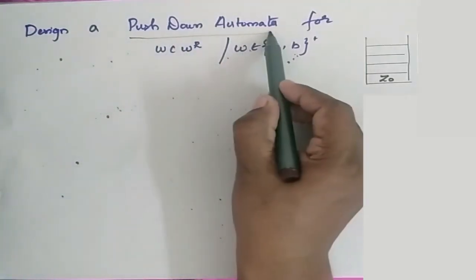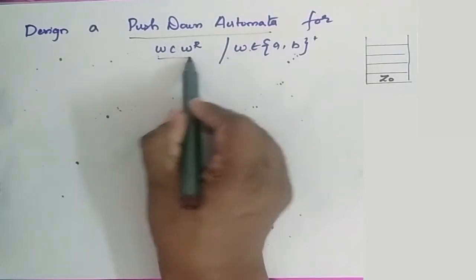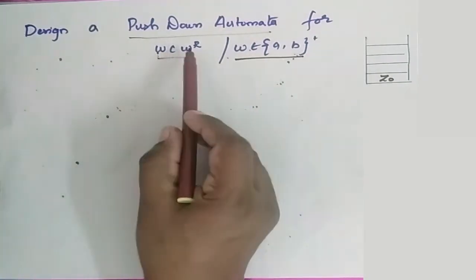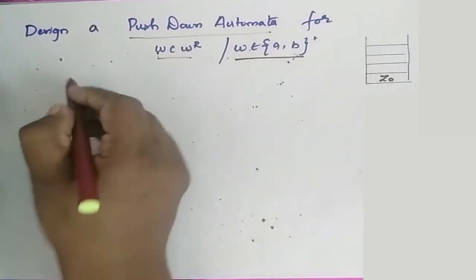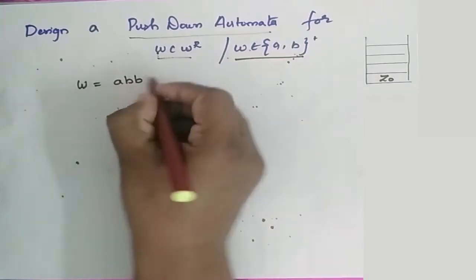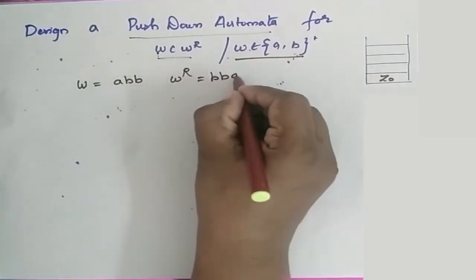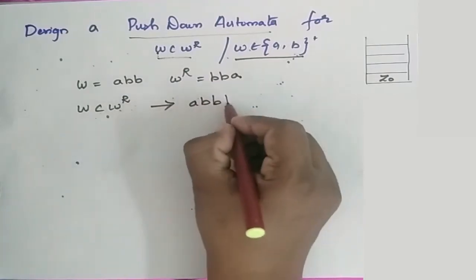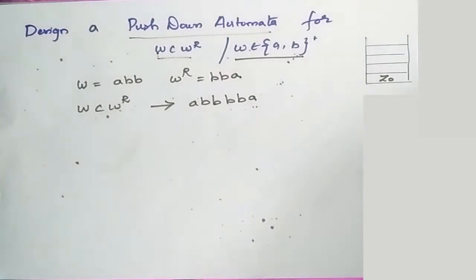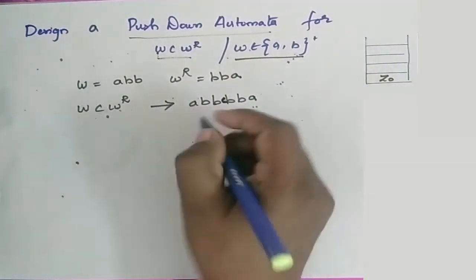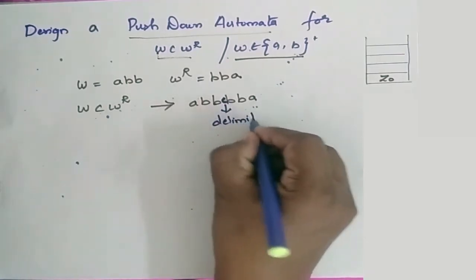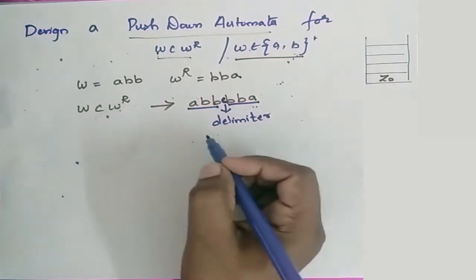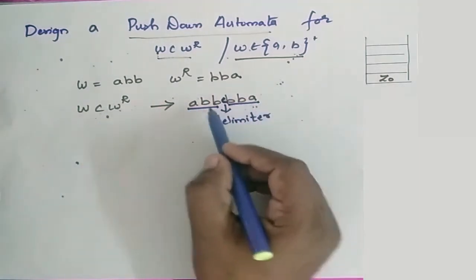Design a pushdown automaton for WCWR where W belongs to {A, B}+. If W is a string, WR is the reverse of that. So, when W is ABB, then WR equals BBA. So WCWR is ABB C BBA, where C is a delimiter which comes between W and WR. Now we have to check whether this string is accepted.